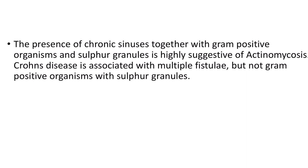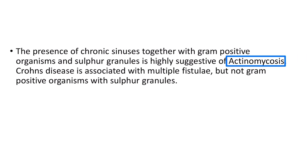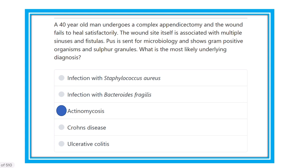Multiple sinuses are present in actinomycosis, but they are also seen in Crohn's disease. The key difference is that in Crohn's disease, there is no responsible organism — it is an inflammatory process — and there is no sulfur granule formation. In actinomycosis, sulfur granules are present. When sulfur granules are identified, go directly to actinomycosis as the diagnosis. With multiple sinuses, multiple fistulae, and a gram-positive organism, all signs point to actinomycosis.